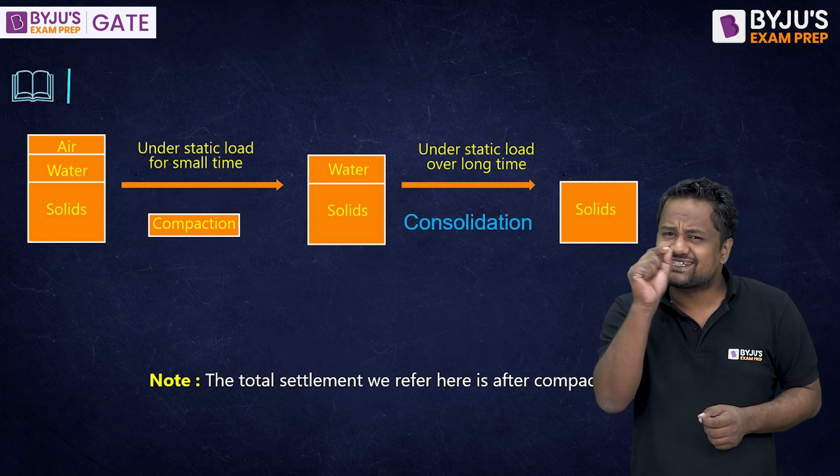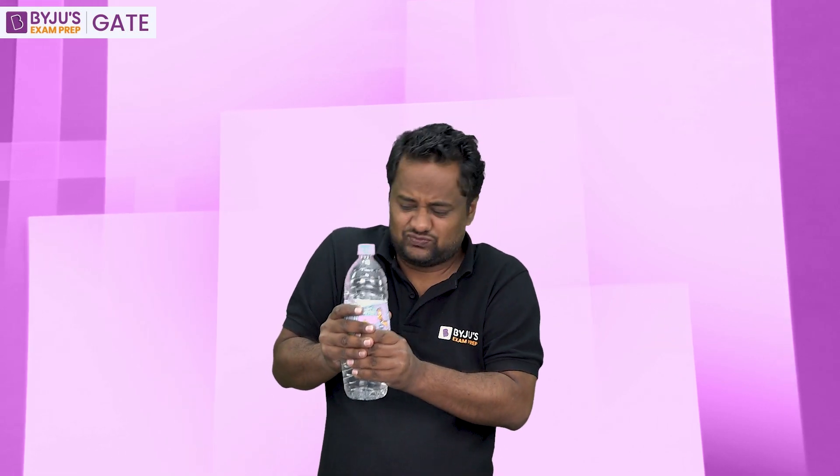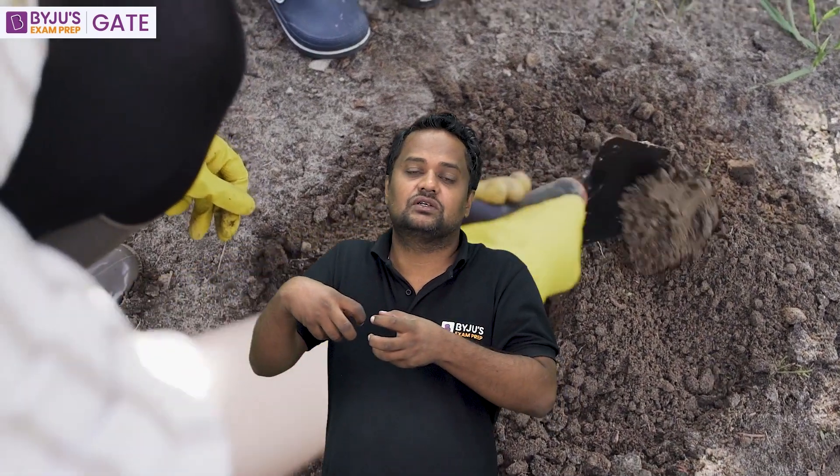Now, what is this excess pore water pressure? Suppose you can see this bottle — when we are applying no load, the water is in hydrostatic condition. But if I apply load on this water, there will be more pressure. Similarly, when in soil we apply extra load, the water comes under more pressure than its own hydrostatic weight — that extra pressure is excess pore water pressure.